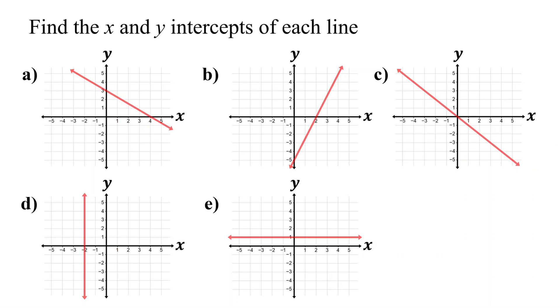In this lesson, you will learn how to find the x and y intercepts of a line from a graph of a linear equation. The point where a line crosses the x-axis is called the x-intercept. At this point, the y-coordinate is 0.